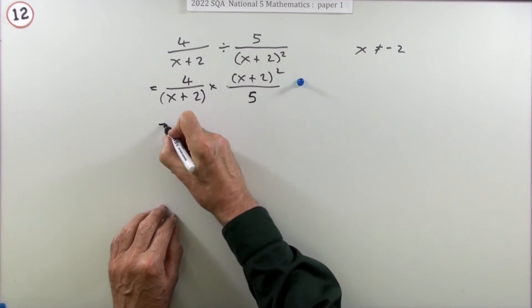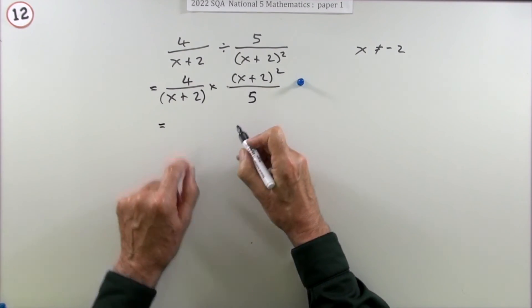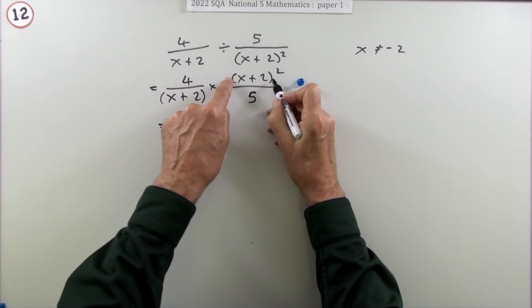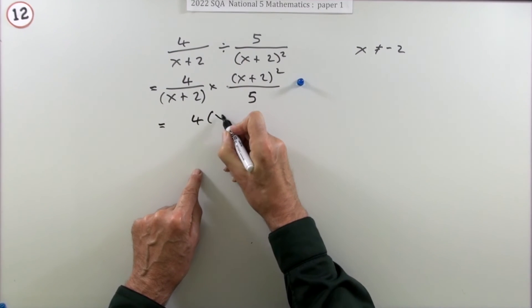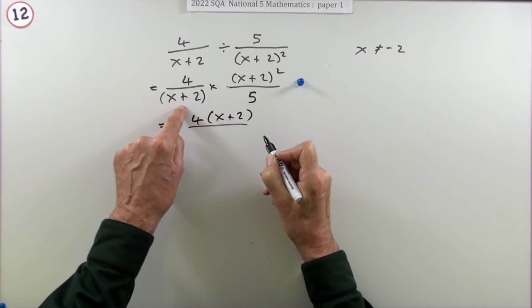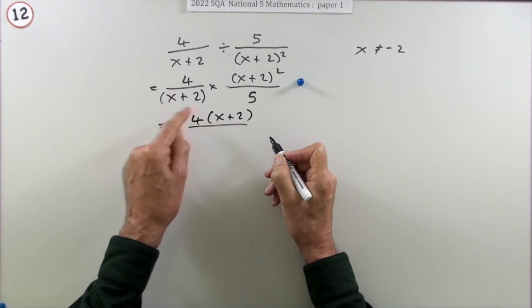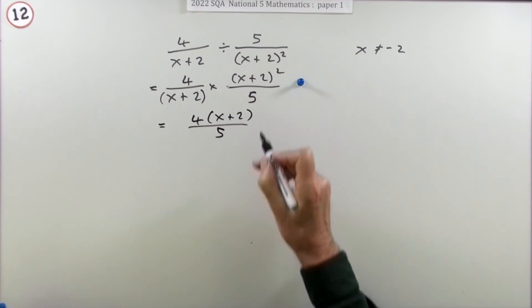Which means that after you've carried out the cancellation, you're left with the 4 and one of them. Remember 2 means power 2, means it was two of them, one of them. That one's gone to be replaced by a 1, times the 5 is 5, and that's the answer.